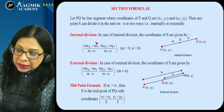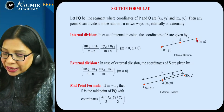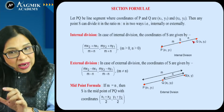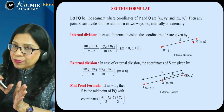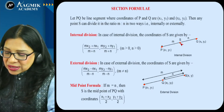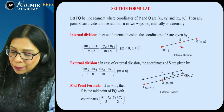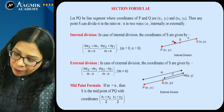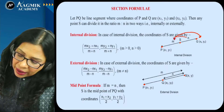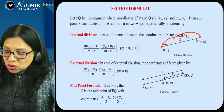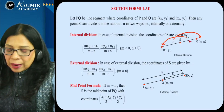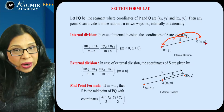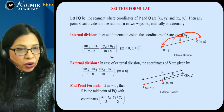For internal division, point S lies between P and Q. The coordinates of S for internal division are: x = (mx2 + nx1) / (m + n), y = (my2 + ny1) / (m + n), where m and n are both positive. The rule is: multiply m by the farther point's coordinate and n by the nearer point's coordinate.